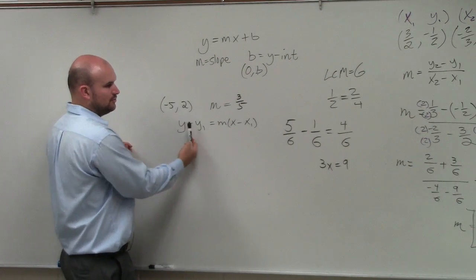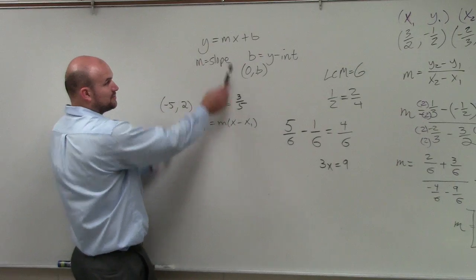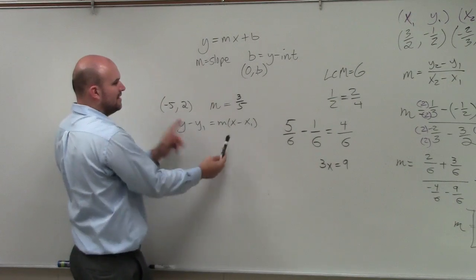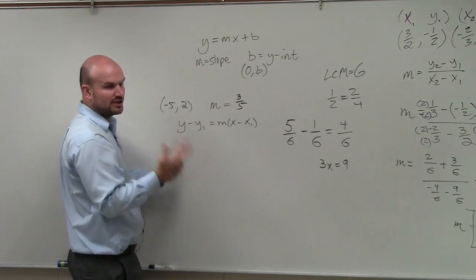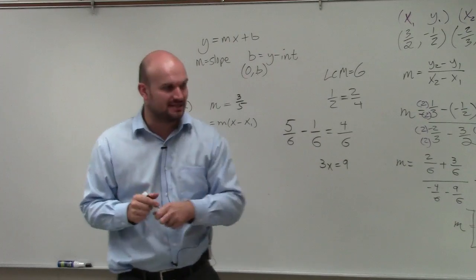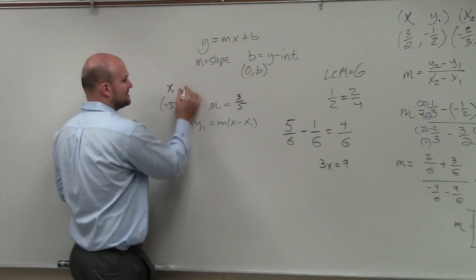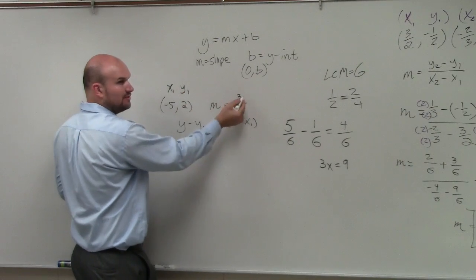So you can see that there's two y's and two x's. Well, we have the y and the x, which we're going to use to write the equation of the line. And then we have this x1 and y1, which are going to represent any point that lies on the line. So all I'm simply going to do is label this x1 and y1, and we know this is m.